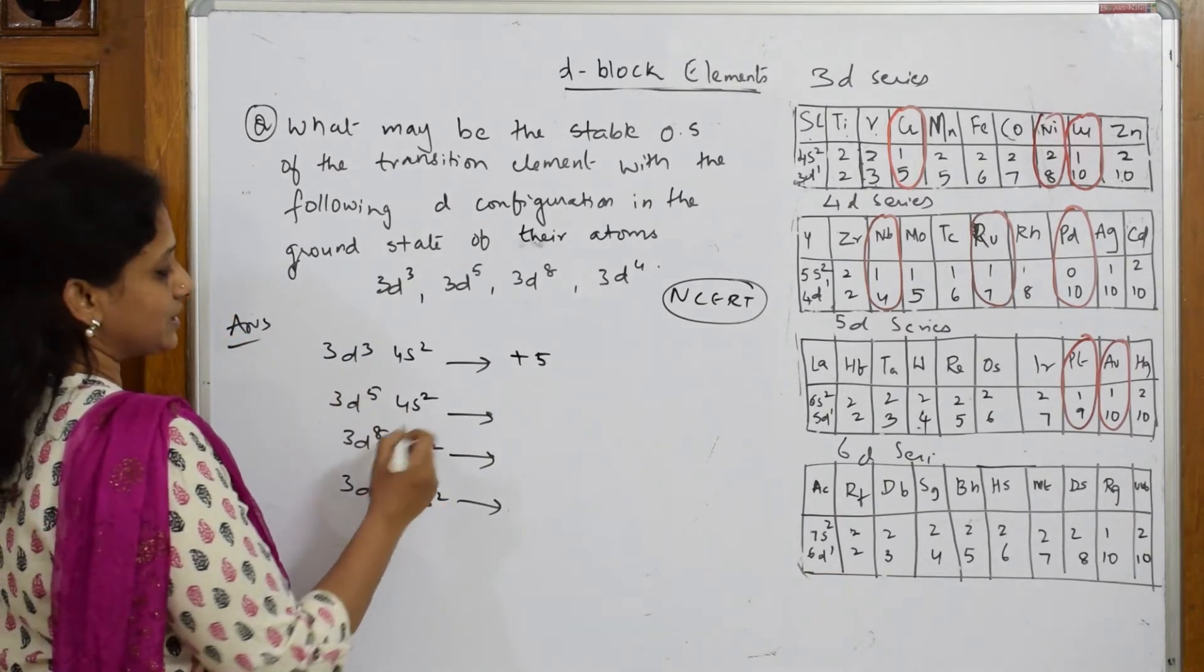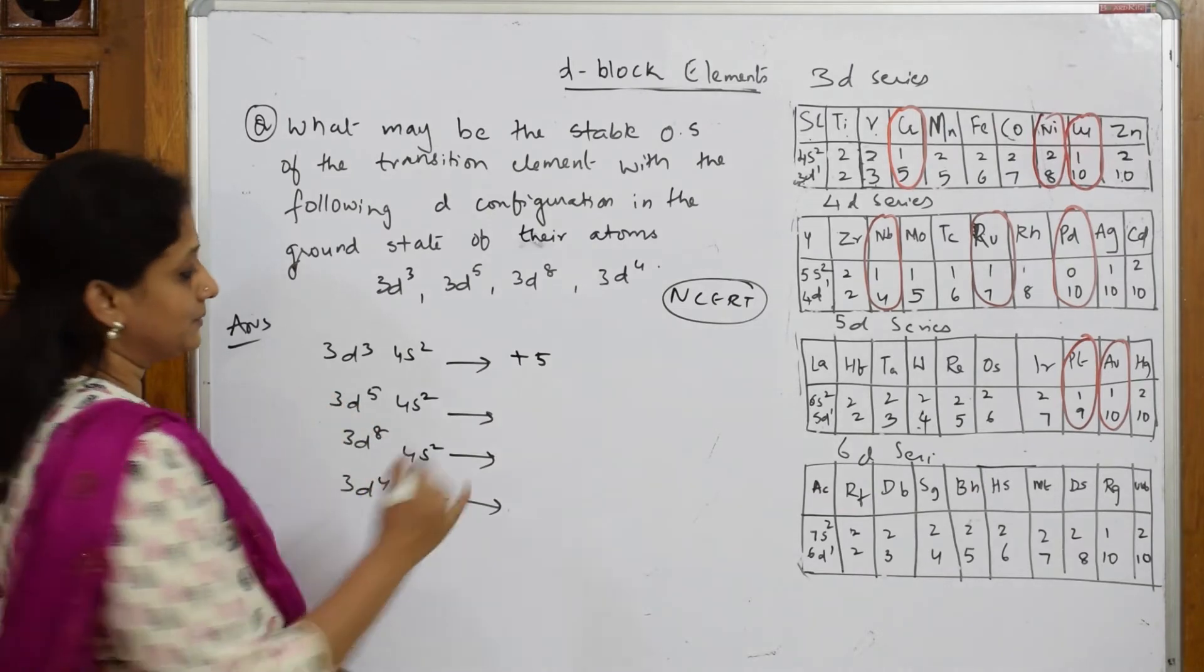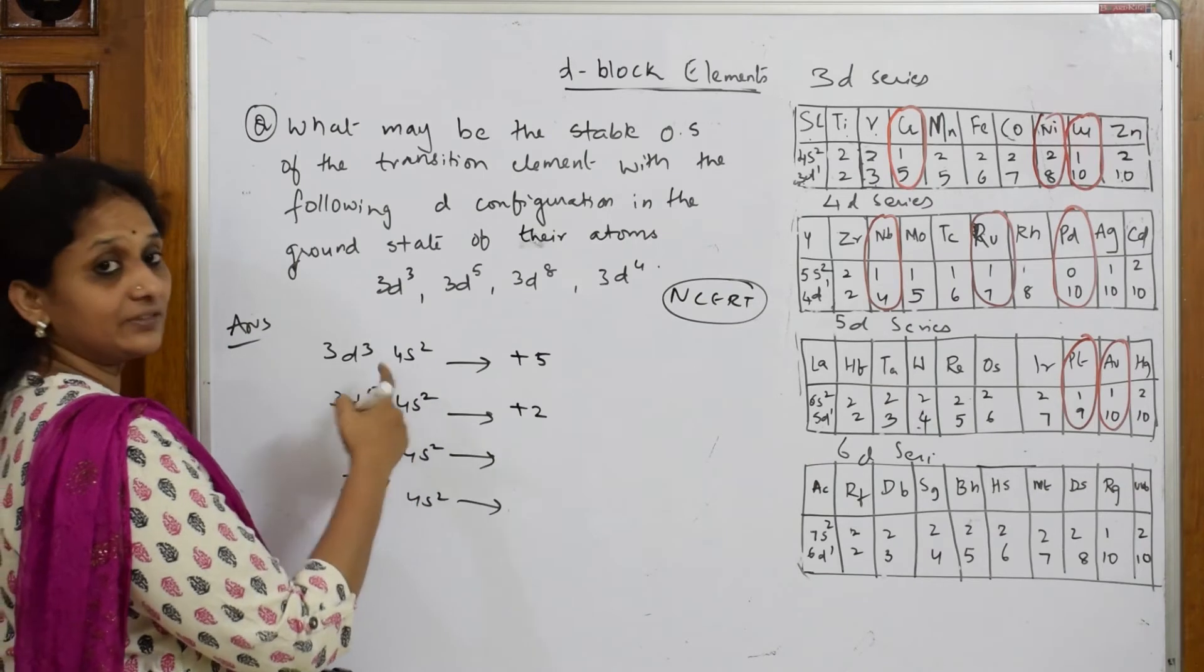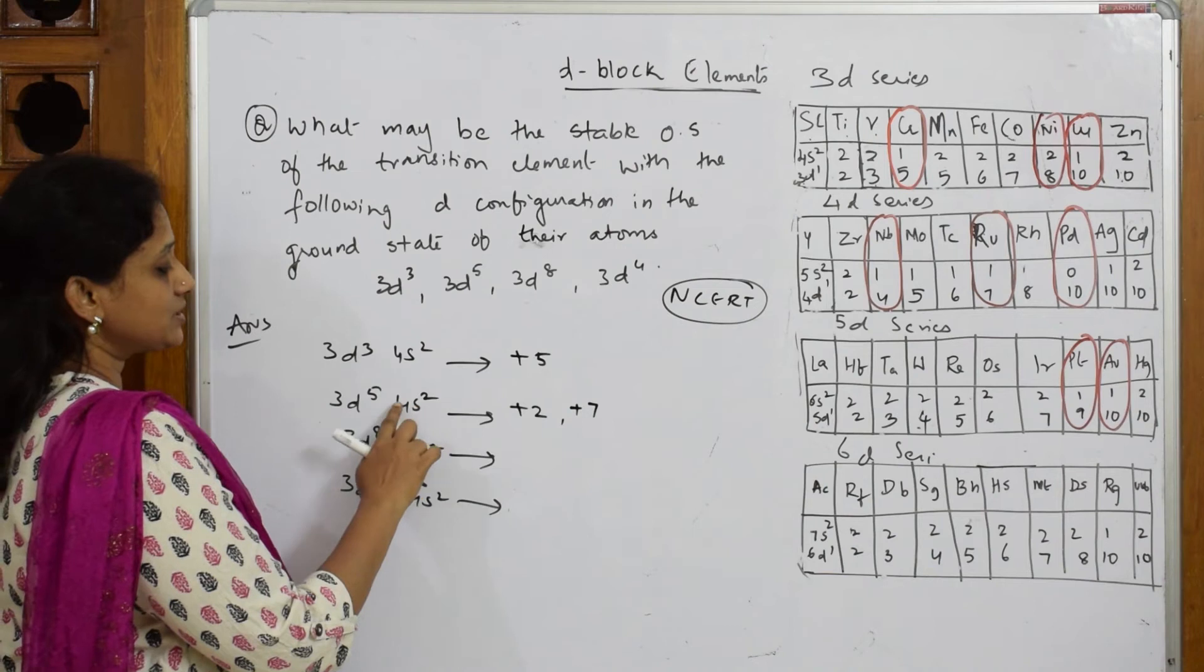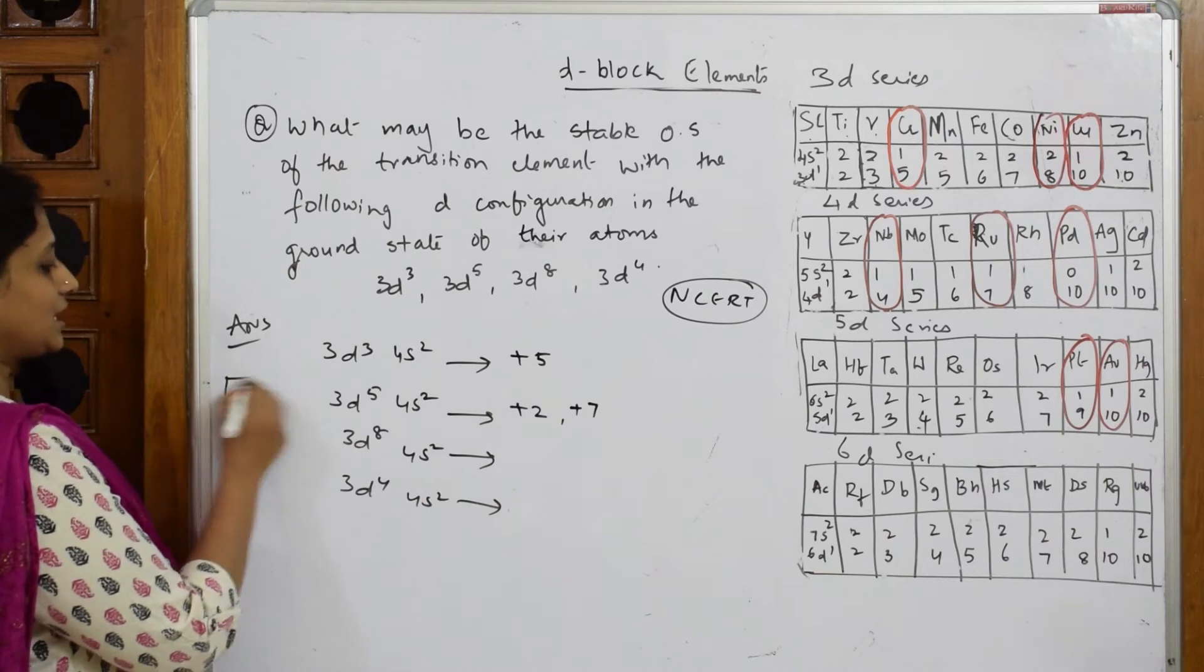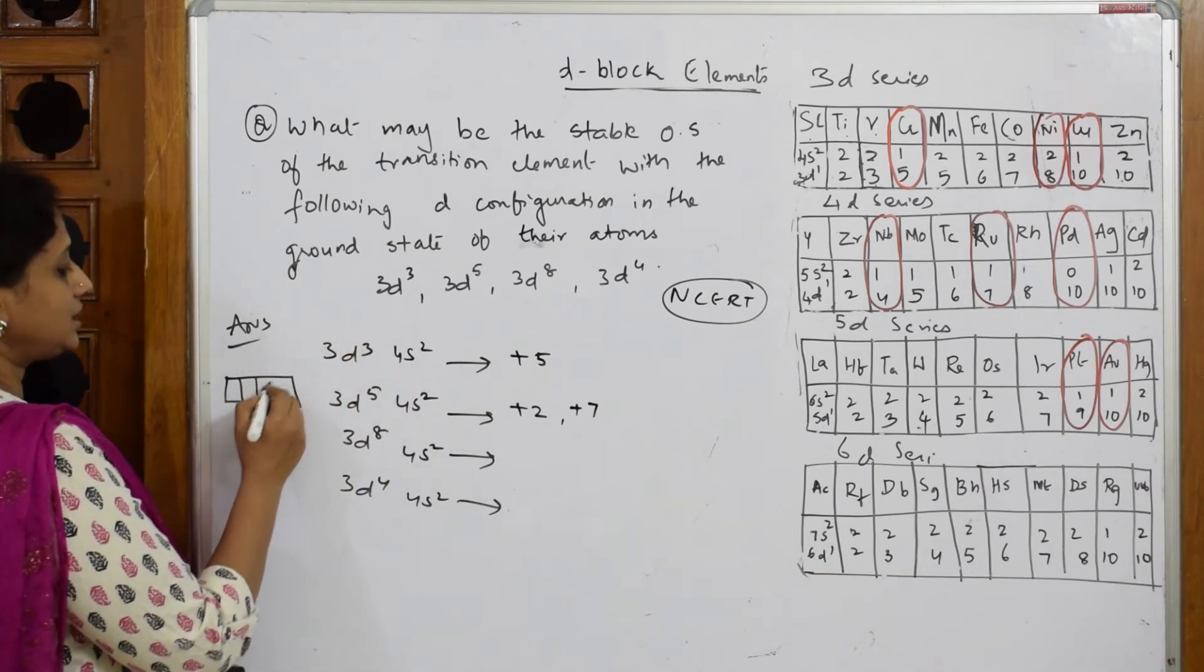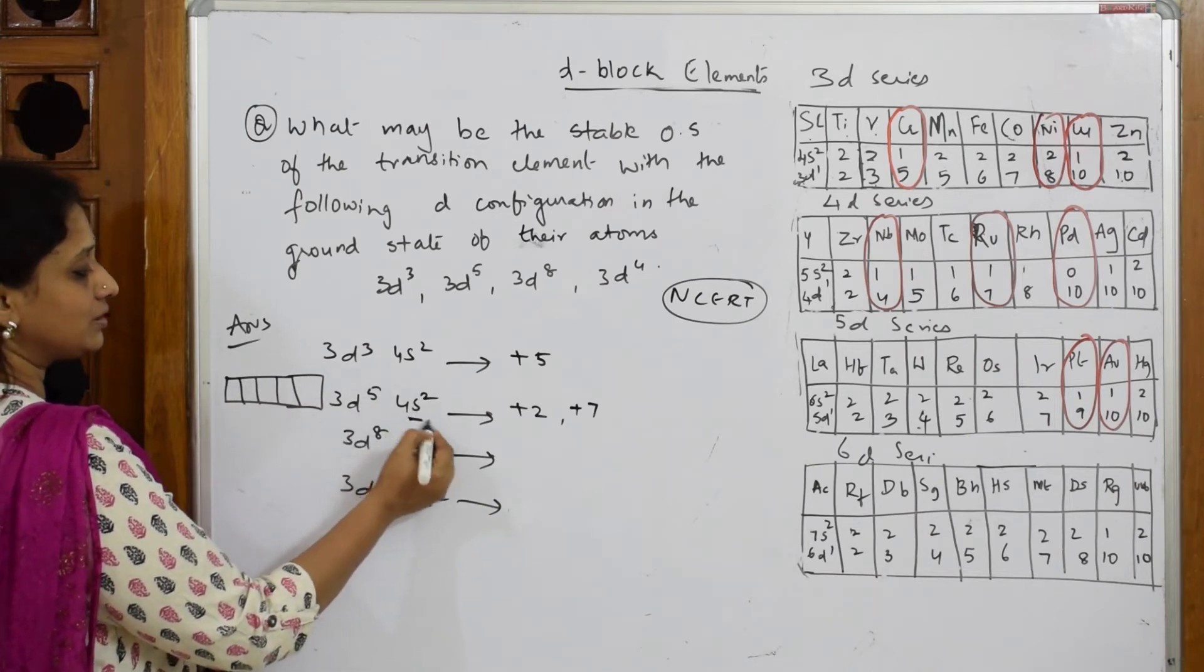Let us come back here. You have two possibilities: it can lose +2 and this becomes half-filled and stable, so +2. It can also lose 7, so +7. Now can I see 6 here? Let me check how many - there are 7 total, so can I make +6?